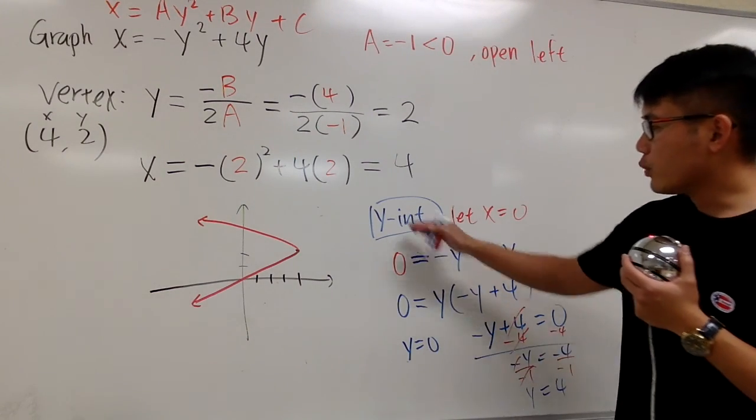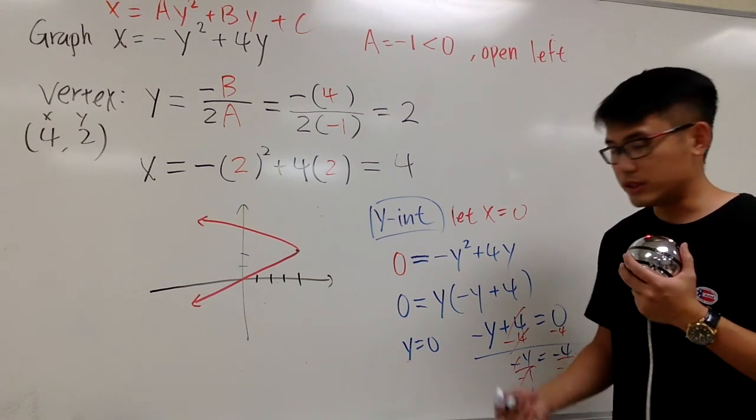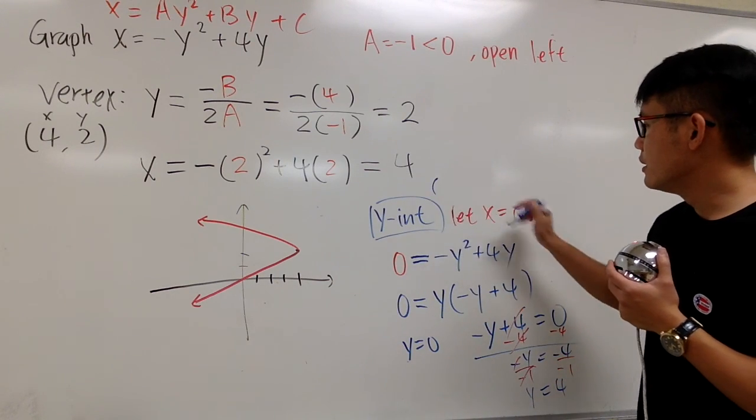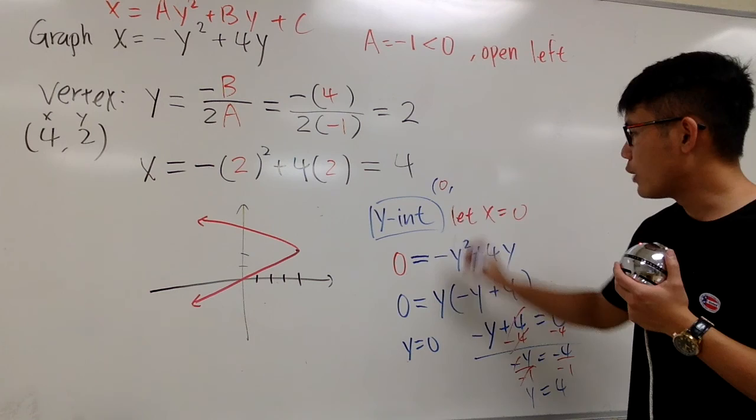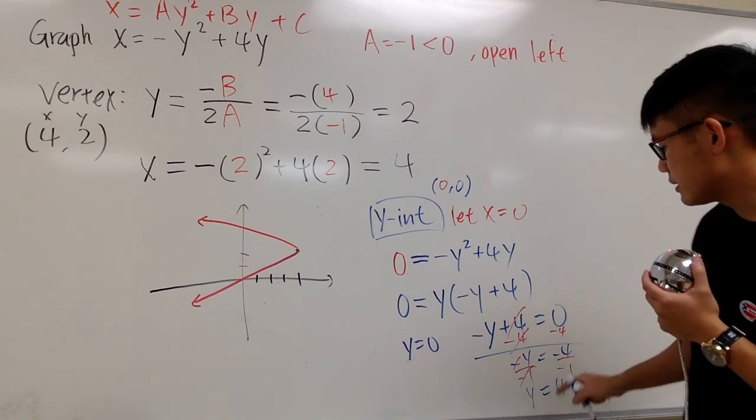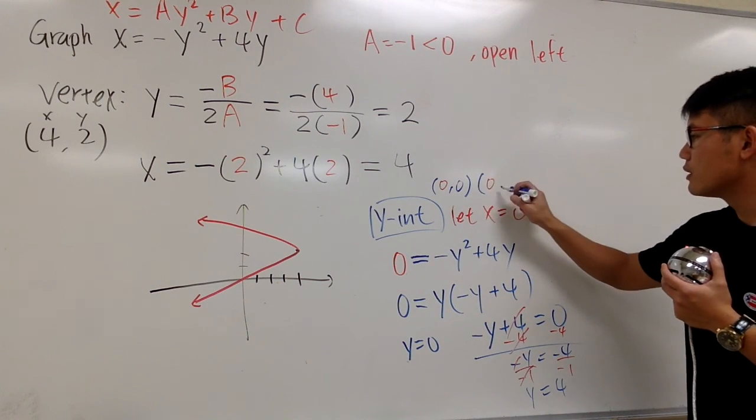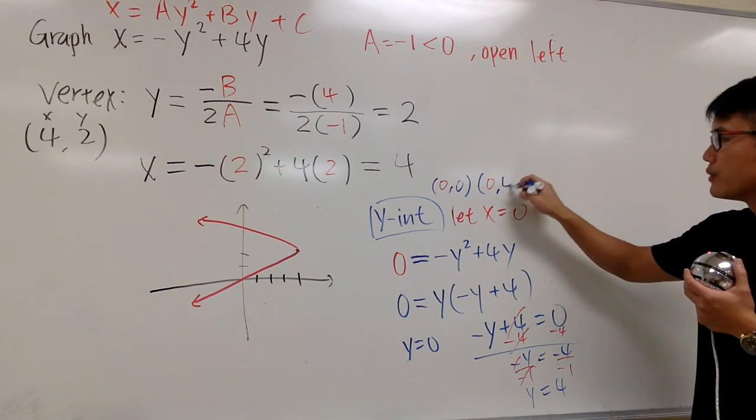As you can see, for the y-intercept, we have two points. First one is x equals 0 and then y will be 0. And the second one is x equals 0 and y equals 4.